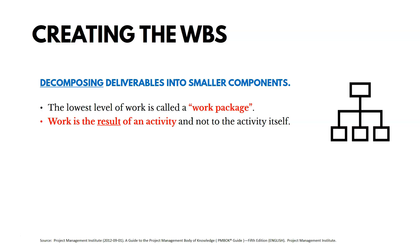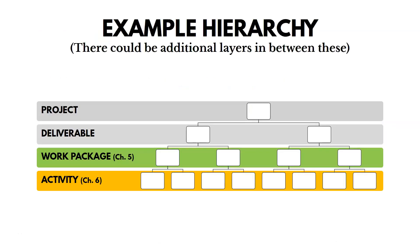Here's an example. On a house, work packages might be the roof, the flooring, the foundation, the walls, the plumbing, the electrical, and so on — they're packages of work, results of an activity. In the WBS hierarchy, you have the project at the top, then different deliverables, and then work packages at the lowest level.